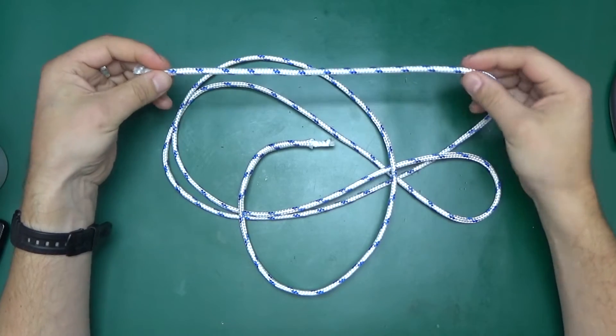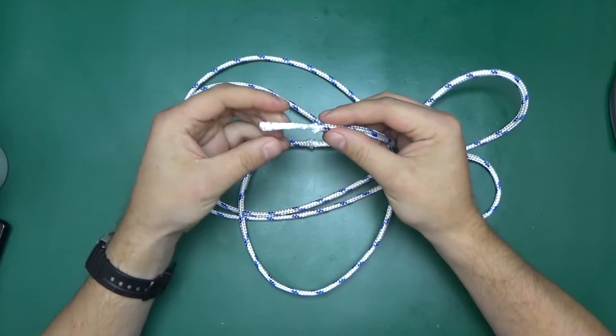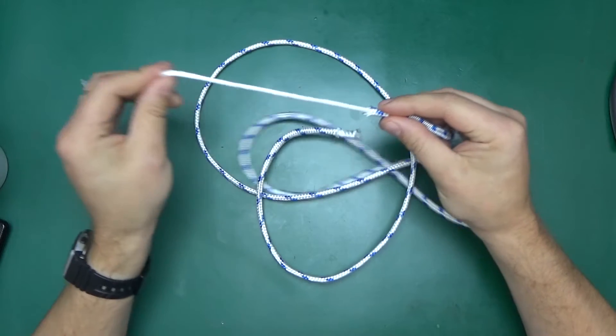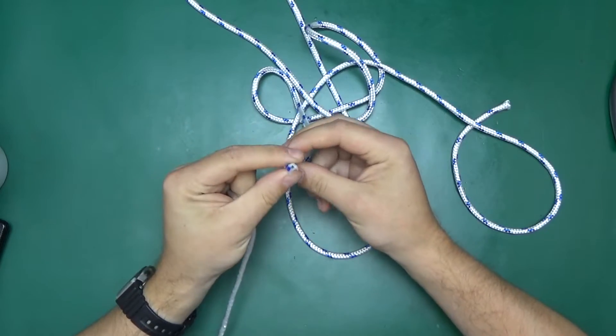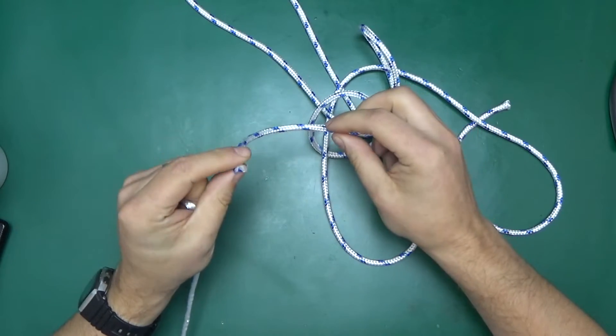So I've cut off approximately 2 meters of this, and as you can see, the inside thread comes out quite easily. It's a very easy process to obtain just the sleeve out of the rope.